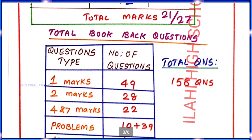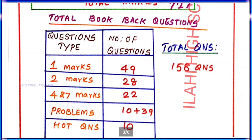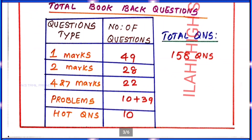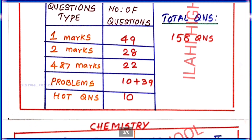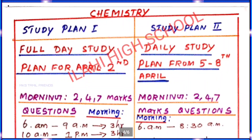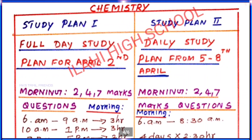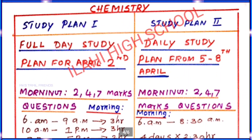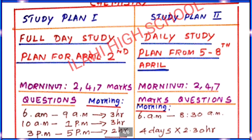For the Chemistry total book question pool, question types are: 1 Mark — 49 questions, 2 Marks — 28 questions, 4 Marks and 7 Marks — 22 questions. There are also 3 problems. That's the Chemistry study plan.